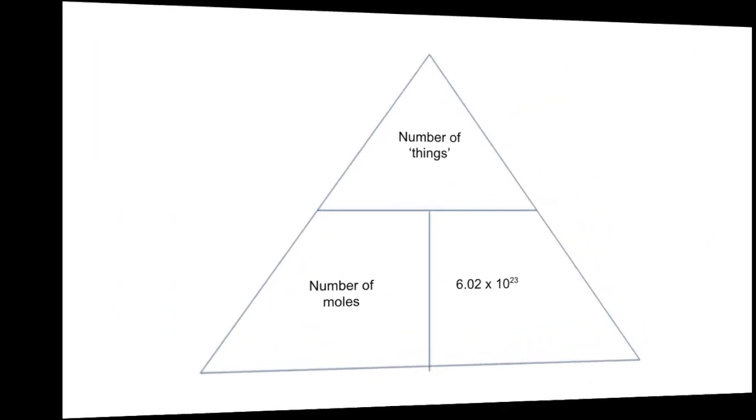So here's the formula triangle that links all that together. If you want to calculate the number of things, you need to know how many moles you've got and then you multiply it by Avogadro's number. And if you want to know how many moles you've got and you know how many things you've got, you just divide that by Avogadro's number.